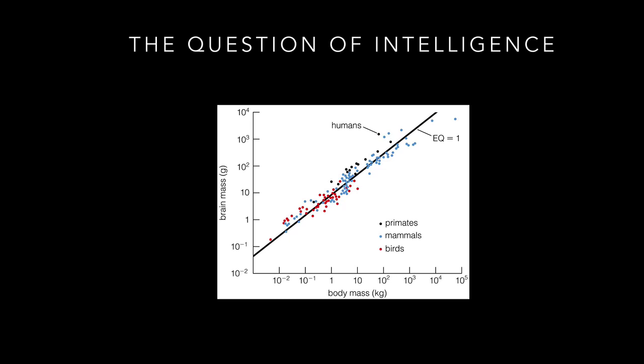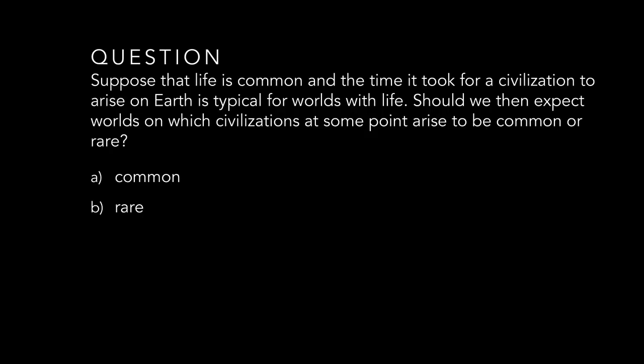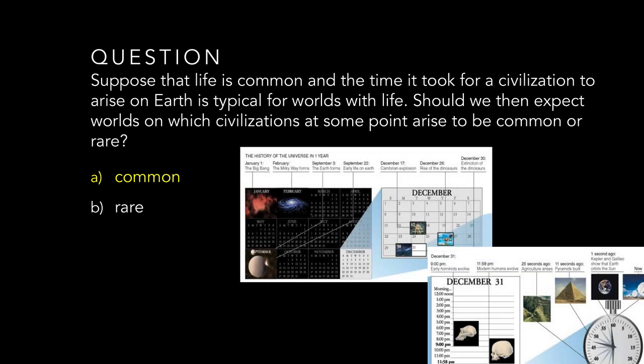To consider what this would mean, suppose that life is common, and the time it took for a civilization to arise on Earth is typical for worlds with life. Should we then expect worlds on which civilizations at some point arise to be common or rare? The answer is common, which you can understand by thinking back to our cosmic calendar. Our universe is about 14 billion years old, meaning our 4.5 billion year old solar system was born when the universe was already some two-thirds of the way through its history to date. This, along with the fact that most stars have lifetimes as long or longer than our sun's, suggests that there ought to be many habitable worlds that formed billions of years before Earth and are still habitable today. Therefore, if life is common and Earth's example is typical, then worlds on which civilizations have at some point arisen should be quite common.